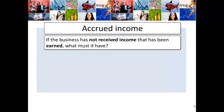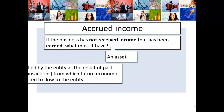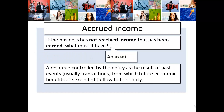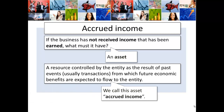Accrued income. The business has not received income that has been earned by the business. So what must it have? It must be an asset — a resource controlled by the business as a result of past events, a transaction from which future economic benefits are expected to flow to the business. And this asset is termed accrued income.